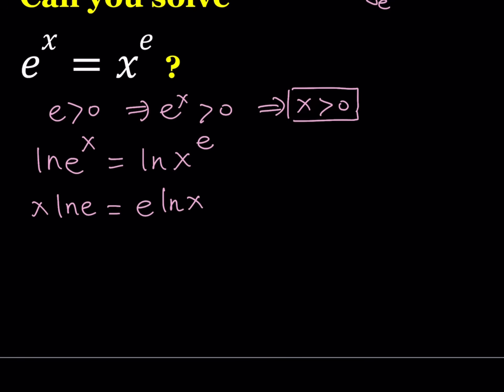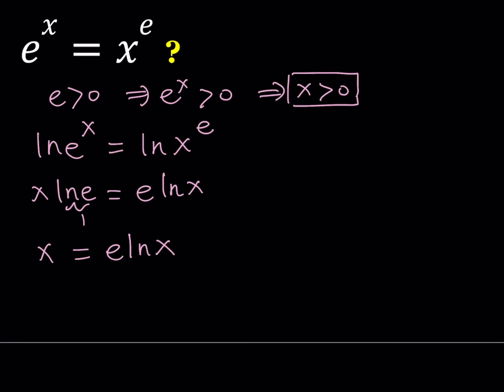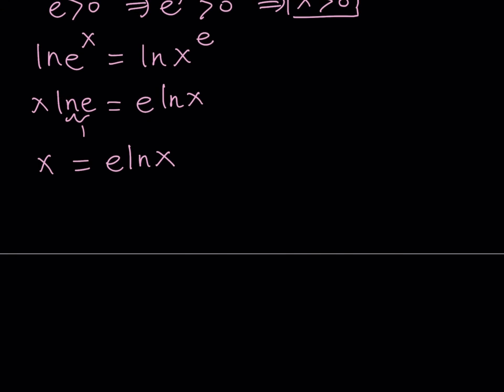Since ln e means log e with base e, this is going to become 1. So from here we're going to get an equation x equals e times ln x — we no longer have any powers. This equation is a non-standard equation because we have logarithms on one side and a linear function on the other side. Let's put everything on the same side and write this as x minus e ln x equals 0.